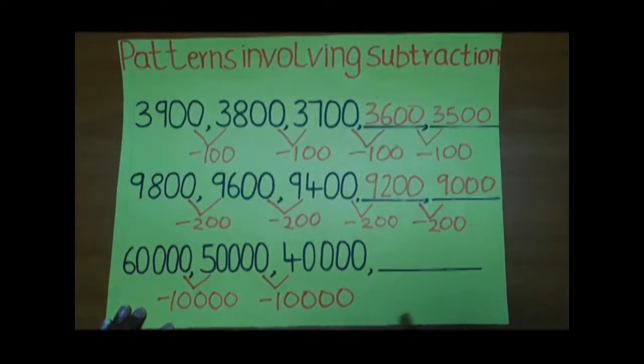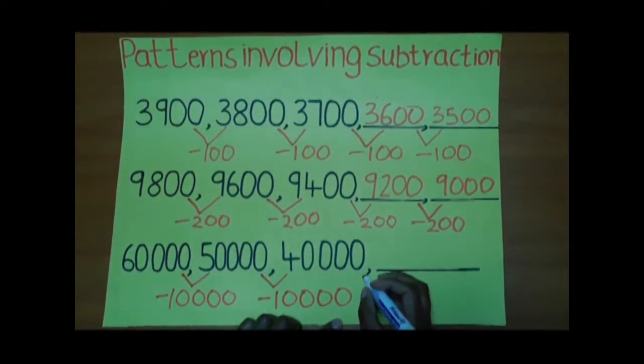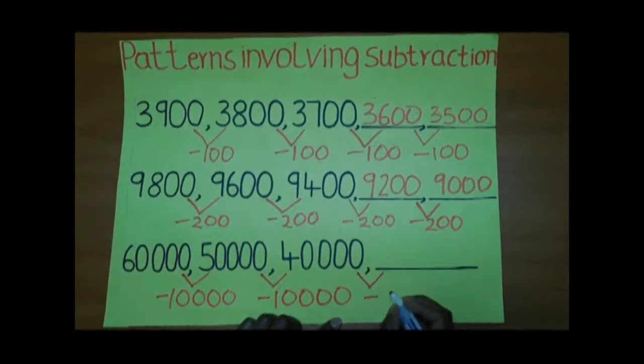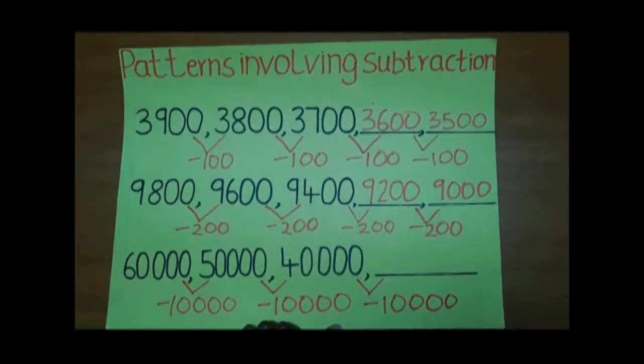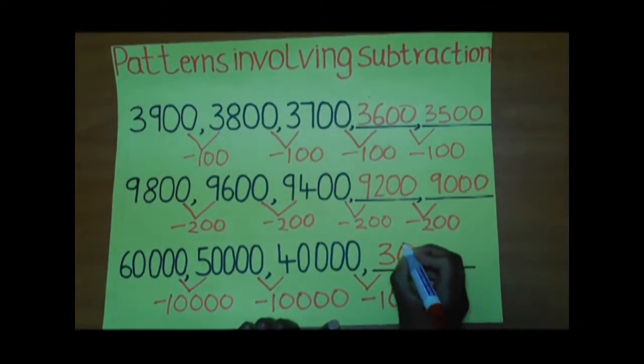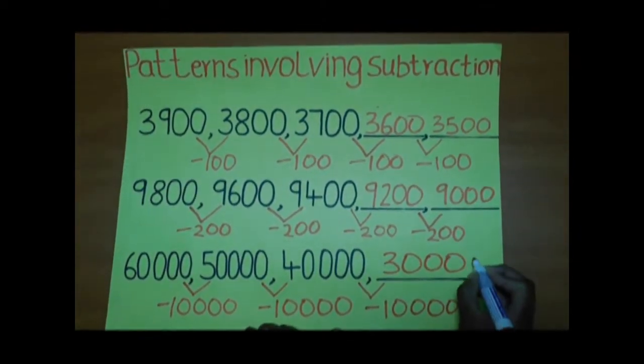Therefore, to get the missing number here, we are going to subtract 10,000 from 40,000 and we will get 30,000. Thank you.